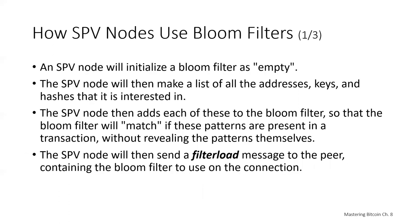Bloom filters are used to filter the transactions and blocks that an SPV node receives from its peers, selecting only transactions of interest without revealing which addresses or keys it's interested in. An SPV node will initialize a bloom filter as empty, then make a list of all the addresses, keys, and hashes it's interested in — extracting the public key hash, script hash, and transaction IDs from UTXOs controlled by the wallet. Those are added to the bloom filter so it will match if those patterns are present in a transaction without revealing the patterns themselves. The node then sends a filter load message to the peer containing the bloom filter to use on the connection.